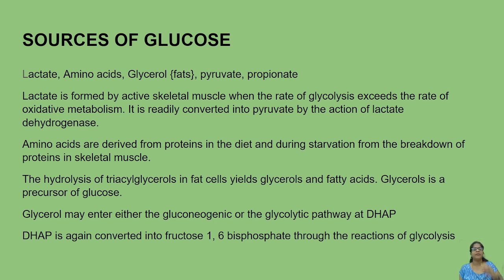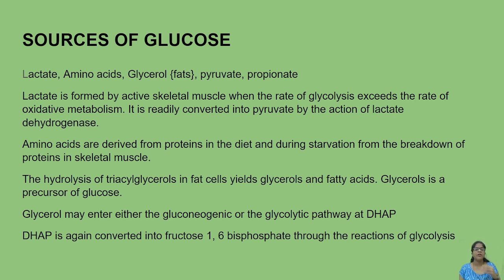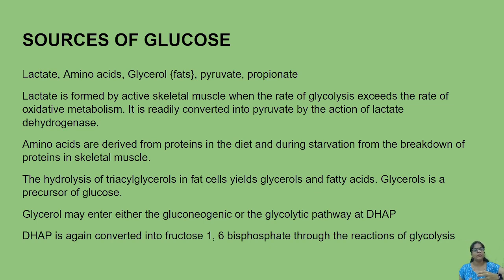In gluconeogenesis, pyruvate is converted into glucose with the help of three different enzymes activated only during fasting conditions. Lactate from skeletal muscle enters this pathway via the enzyme lactate dehydrogenase, converting lactate to pyruvate. Amino acids from the diet also enter the skeletal muscle and feed into gluconeogenesis.